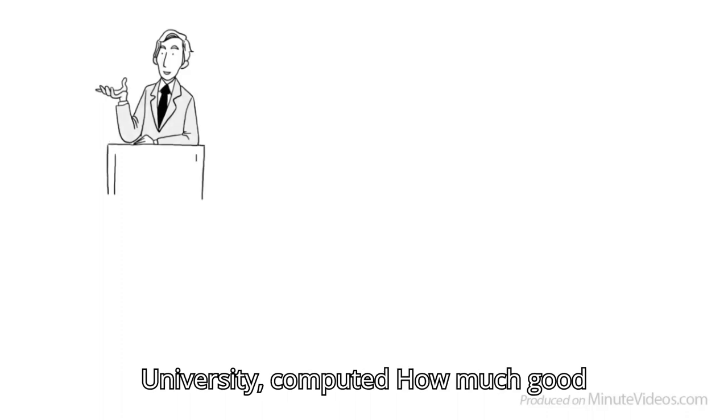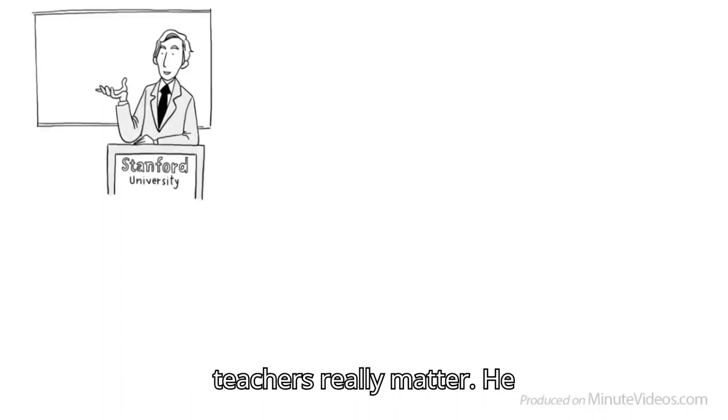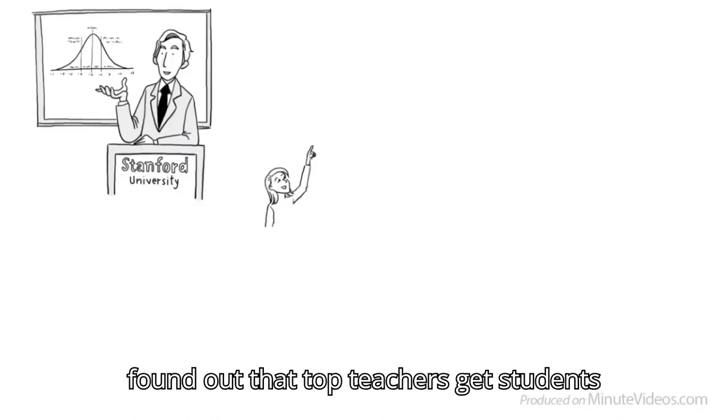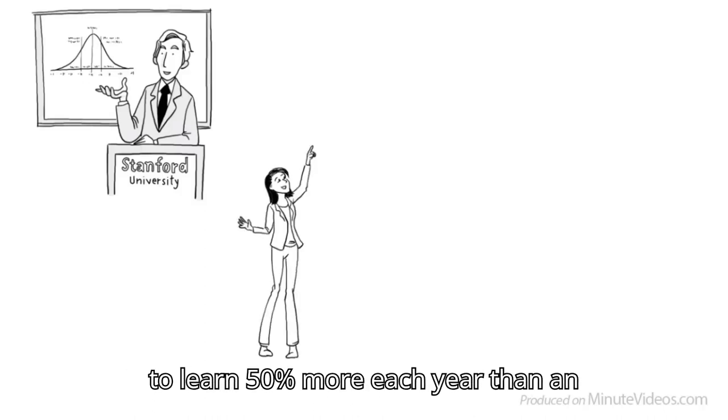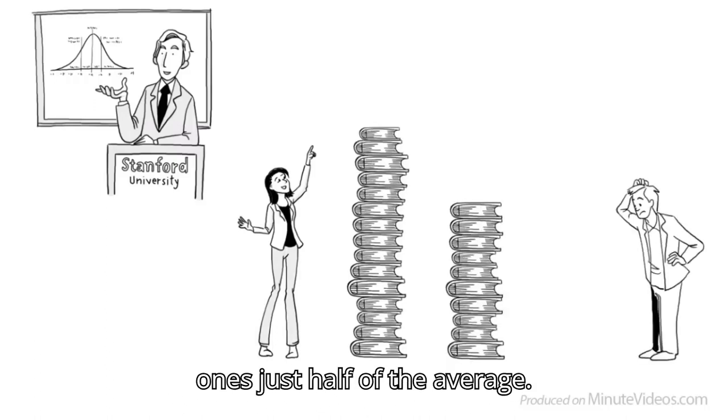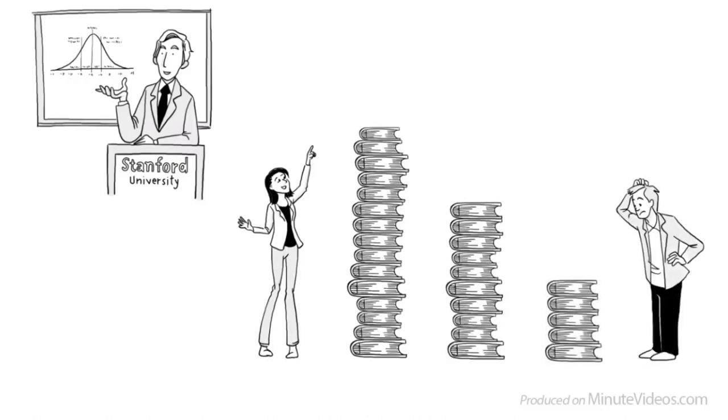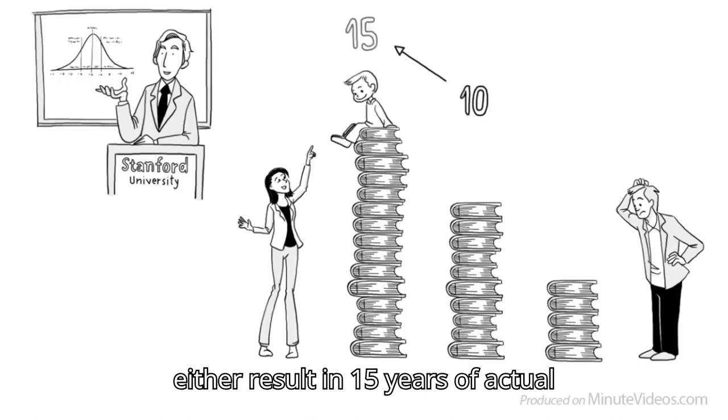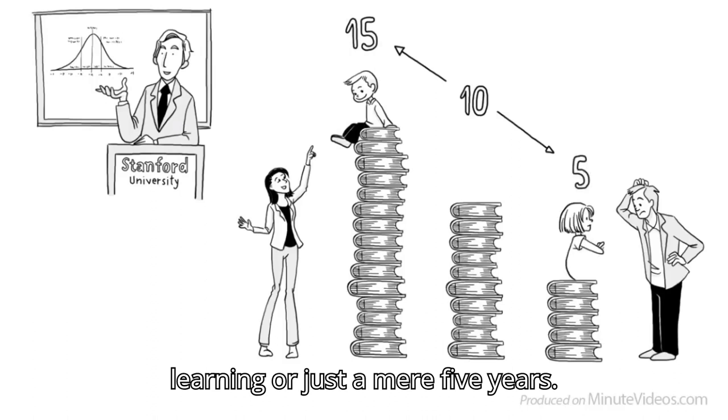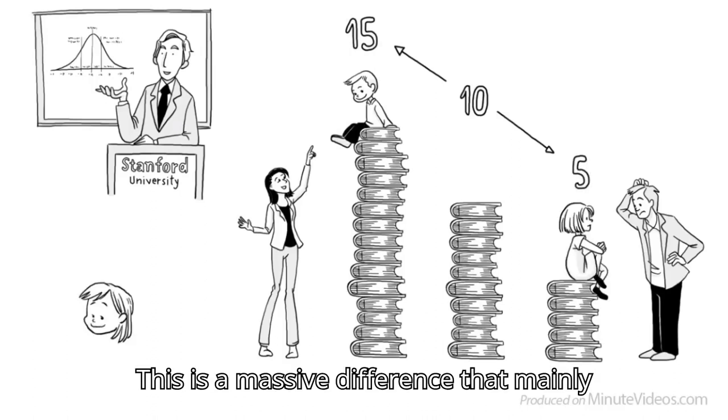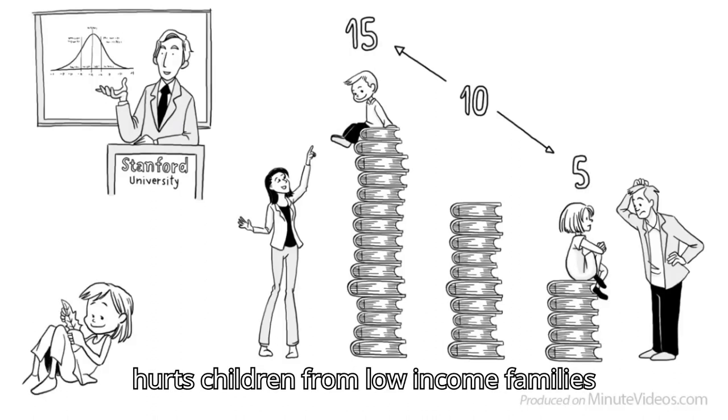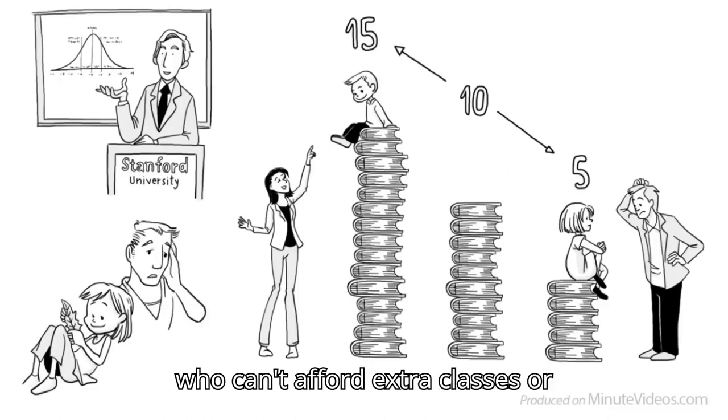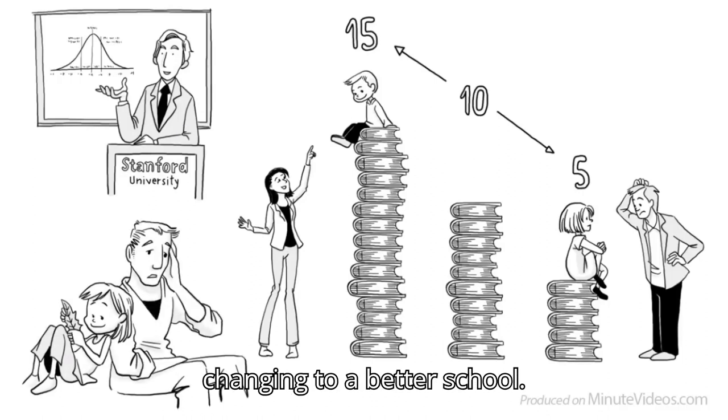Eric Hanushek, professor at Stanford University, computed how much good teachers really matter. He found out that top teachers get students to learn 50% more each year than an average instructor. Poorly trained ones, just half of the average. That means that 10 years at school can either result in 15 years of actual learning or just a mere 5 years. This is a massive difference that mainly hurts children from low-income families who can't afford extra classes or changing to a better school.